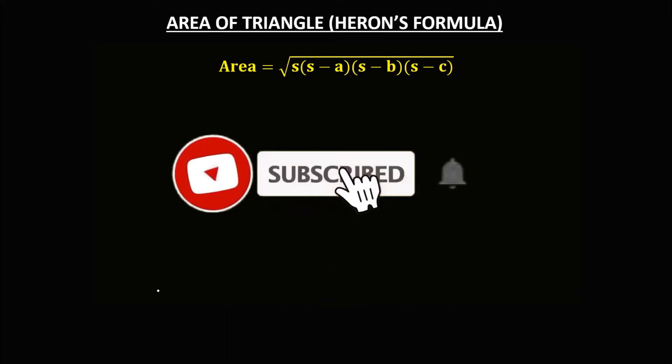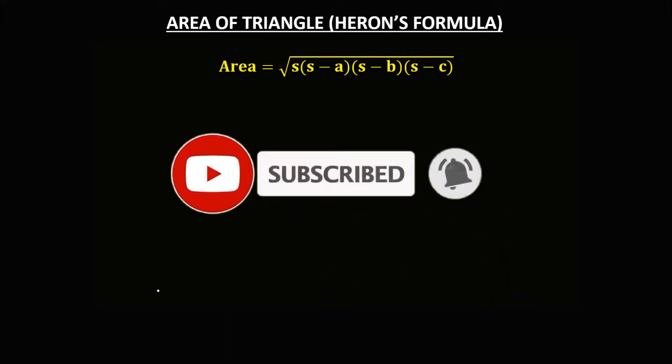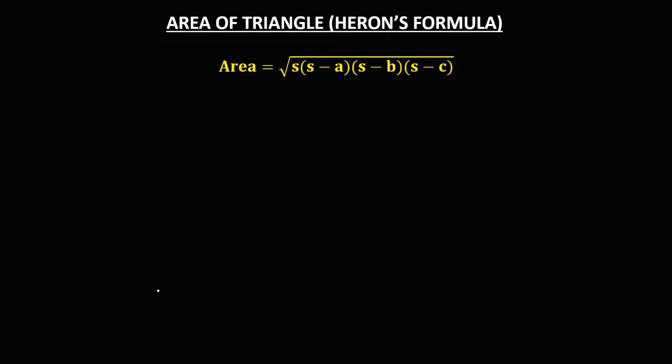Welcome to Math Story. Today's topic is finding the area of a triangle using Heron's Formula. The formula is the square root of s times (s minus side a) times (s minus side b) times (s minus side c), where s is half of the perimeter of a triangle — that is, (a plus b plus c) over 2.